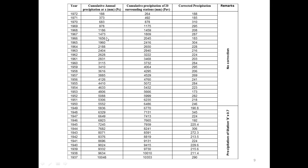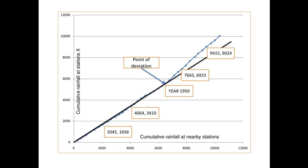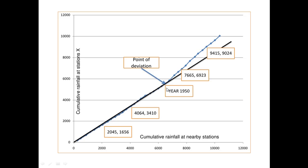After calculating all cumulative annual precipitation values at station X (Px) and cumulative annual precipitation of the 20 surrounding stations (PAB), we plot the double mass curve as shown in the figure. From the plotted curve, a clear point of deviation is visible — from this point the line deviates, indicating an inconsistency.